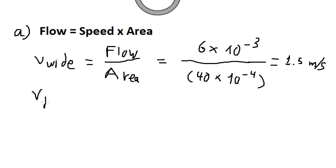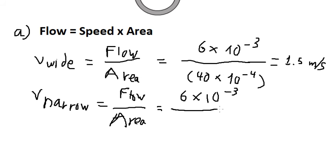Similar for the second one. So we put this number here. The area we have is 10. So we convert to meters. You got about 6 meters per second.